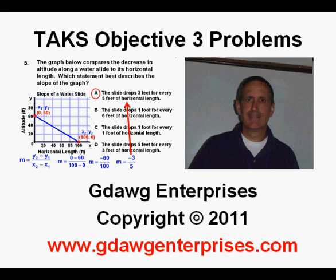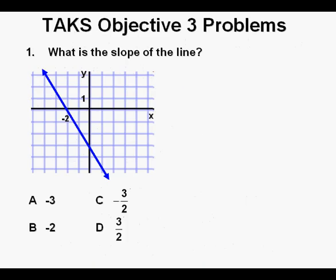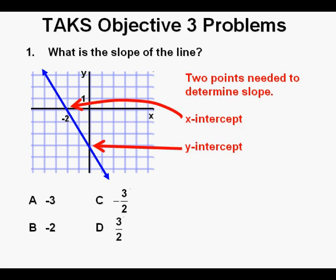TAKS Objective 3 Problems, Problem 1. What is the slope of the line? Here we need to determine the slope of the line given in the graph. We should know that two points are needed to determine the slope of the line. Two good places for points are, in this case, the x-intercept and the y-intercept.